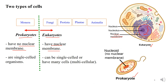Another difference is that prokaryotic cells are single cells — bacteria are prokaryotic and have only one cell. Eukaryotes, however, can be single-celled, such as yeast and plasmodium, or multicellular. Examples of multicellular eukaryotes include plants, animals, and mushrooms.